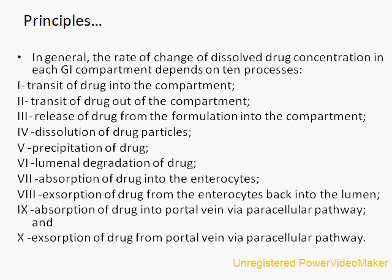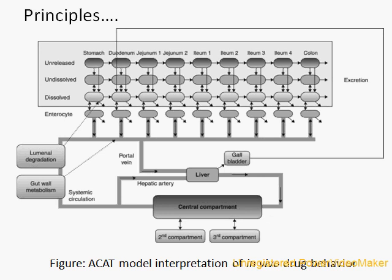These ten processes include transit through the series of compartments, and there may be dissolution, precipitation, absorption, or exsorption. As shown in the figure, the drug may exist in unreleased or dissolved form. Only from the dissolved form will the drug be absorbed into the enterocytes, and exsorption may also take place. From the enterocytes, the drug enters the portal vein, then goes to the liver, and from the liver through the hepatic artery it reaches the central compartment, from where it can move to different peripheral compartments.